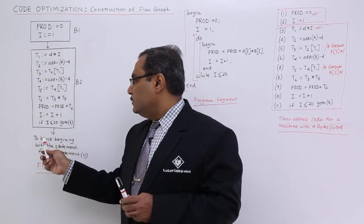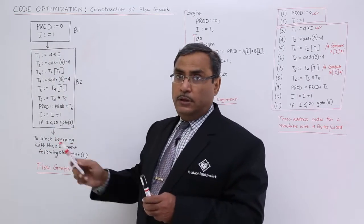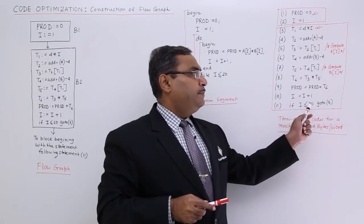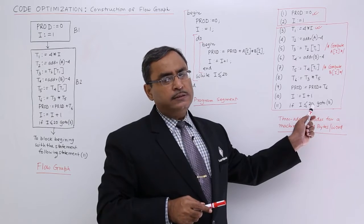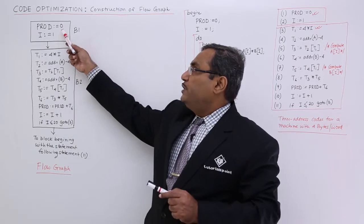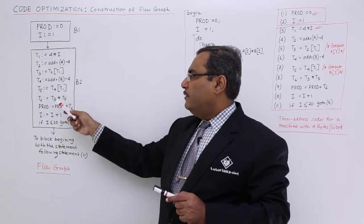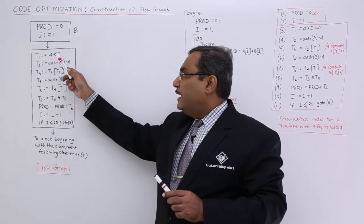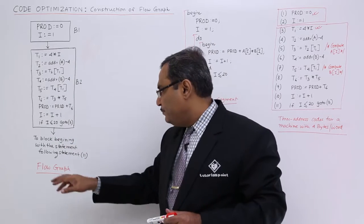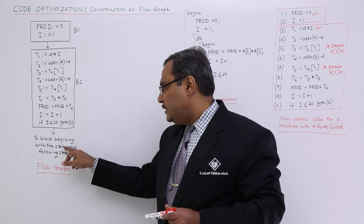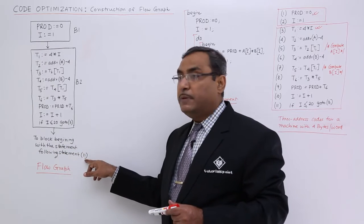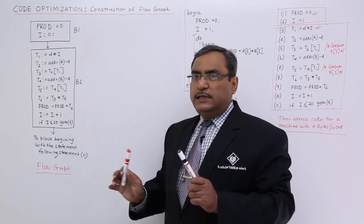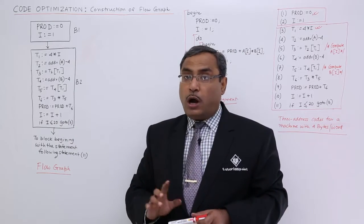The flow graph has been drawn. As planned, two statements appear in the first block B1, and the remaining nine statements are in block B2. The flow graph has been constructed with a block beginning at the statement following statement 11, and control flows to that block. This concludes the local optimization topic for this session.